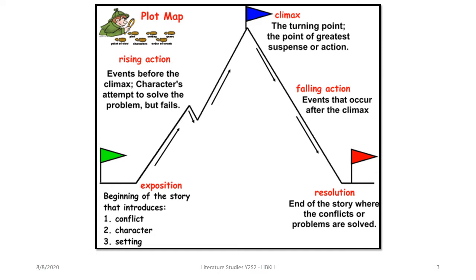As you can see, the plot map. Rising action refers to events before the climax where the character attempts to solve the problem but fails. And then exposition — the beginning of the story that introduces the complete character and setting.